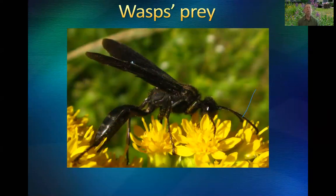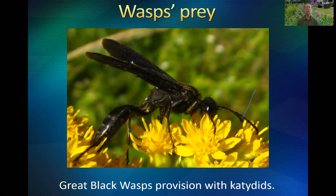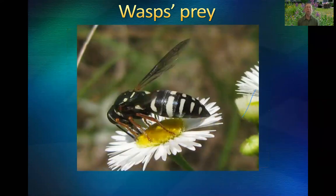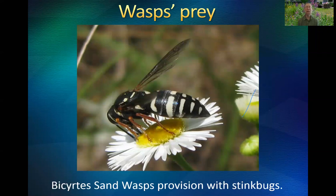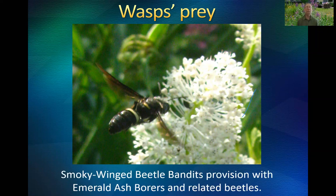I want to talk briefly about the variety of prey insects that some native wasps go after. Great black wasps — I call them the Darth Vader wasp — provision their nest cells with katydids, helping keep their numbers in check. Bicerides genus sand wasps provision their nests with stink bugs. The smoky-winged beetle bandit feeds on emerald ash borer beetles and related beetles — wasps doing ecological services by reducing pest insects. They're not enough to stop emerald ash borers, but they're enough to slow the spread.